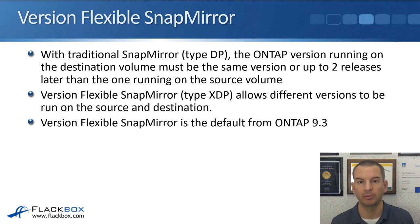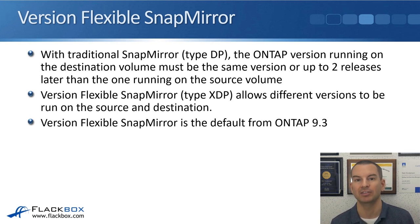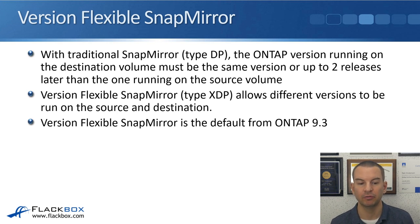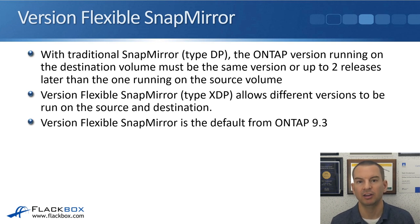With traditional SnapMirror, the original TypeDP, the ONTAP version on the destination must be the same version or up to two releases later than on the source. TypeDP can be used for both SnapMirror and SnapVault. The current type used is TypeXDP, which stands for Extended Data Protection — this is Version Flexible SnapMirror, which allows different versions to run on the source and destination. Originally TypeDP had better performance than TypeXDP, but that performance difference is no longer significant in later ONTAP versions. From ONTAP 9.3, Version Flexible SnapMirror is now the default and is what you should always be using.